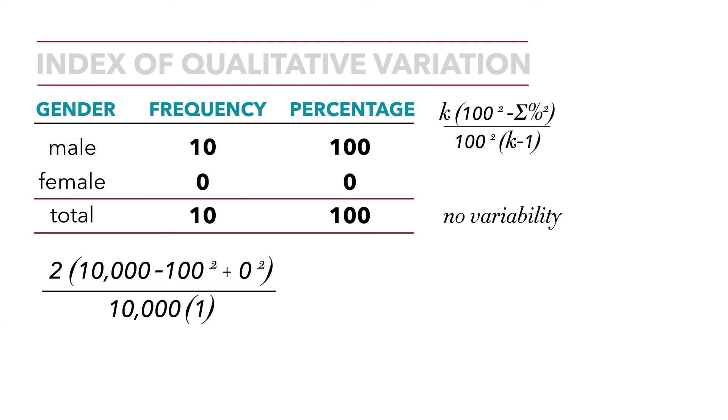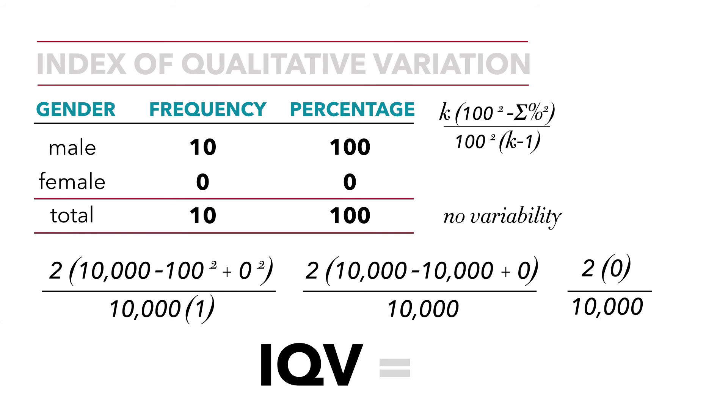If we do the math using the appropriate rules of precedent, we do exponentiation first. So we're left with 2 times 10,000 minus 10,000 plus zero over 10,000, which leaves us with 2 times zero over 10,000, which equals zero. The index of qualitative variation is zero, and we can clearly see that in the example. There is no variability.